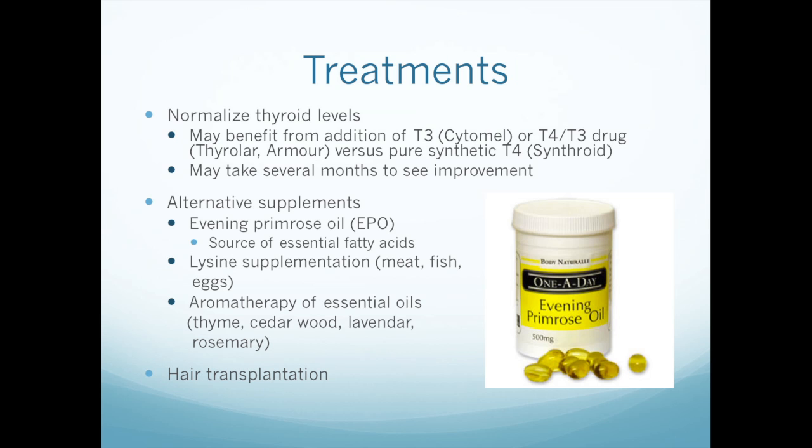The good news is that there are some treatments. First of all, normalizing your thyroid levels — that's the first goal. Some patients have noticed they have better luck with a combination of drugs, as opposed to just being on a pure T4 synthetic drug like Synthroid. If you can add a T3, either alone or in combination with the T4 drug, some patients note that helps a little bit more. The important thing is to be patient — there's no quick fix. You have to give it several months to really work, whether that's normalizing your levels or trying another drug.